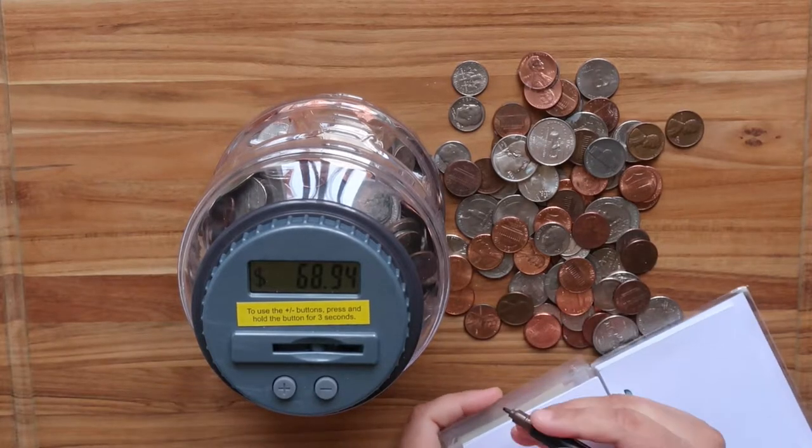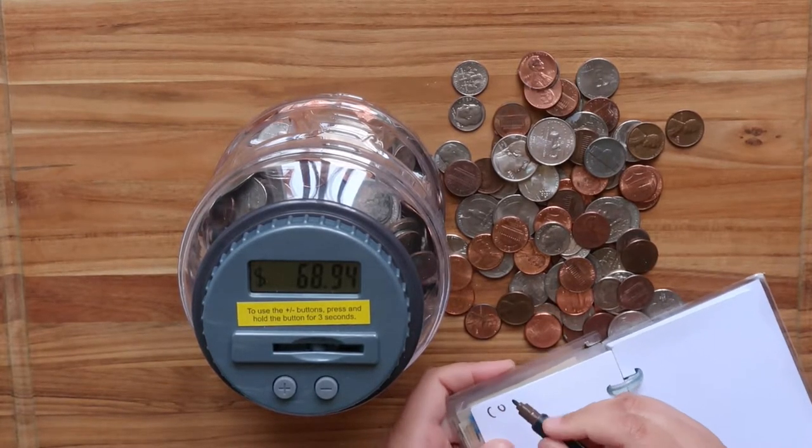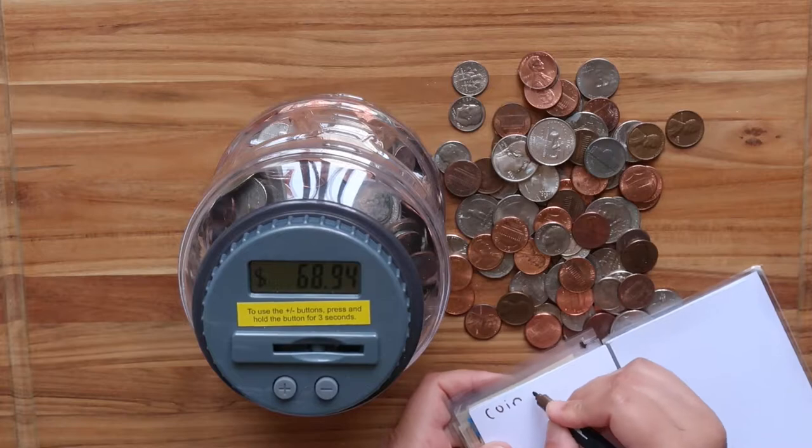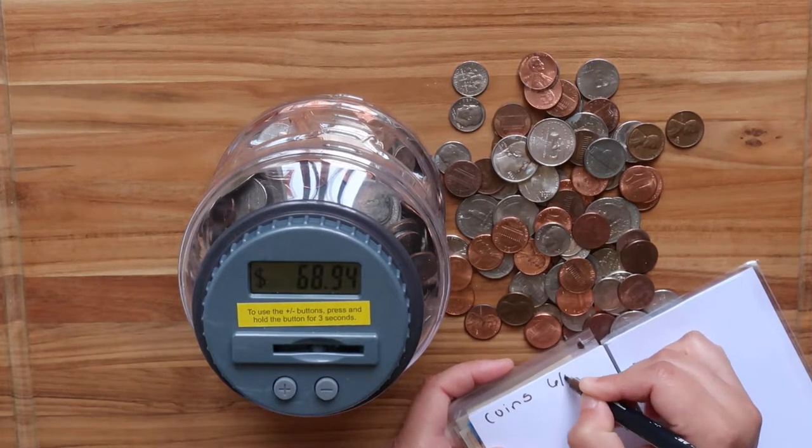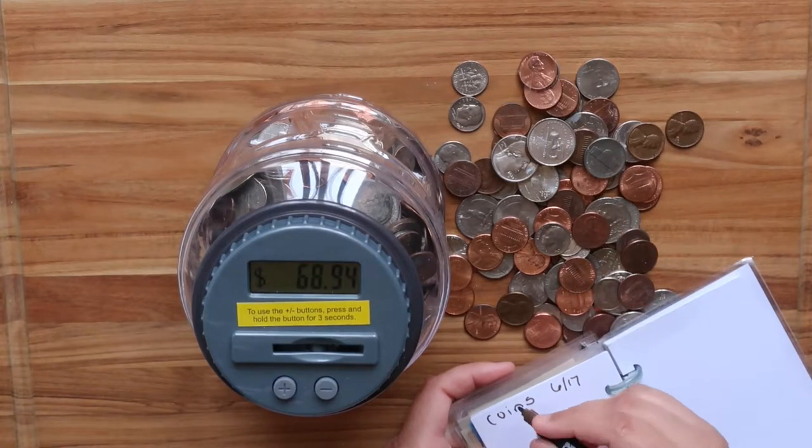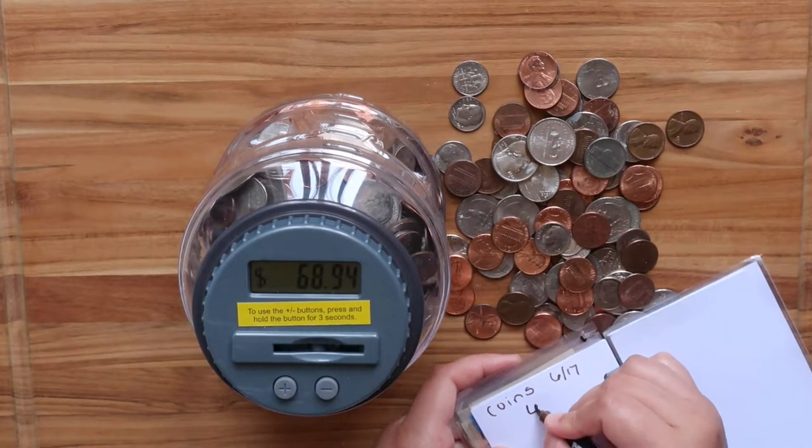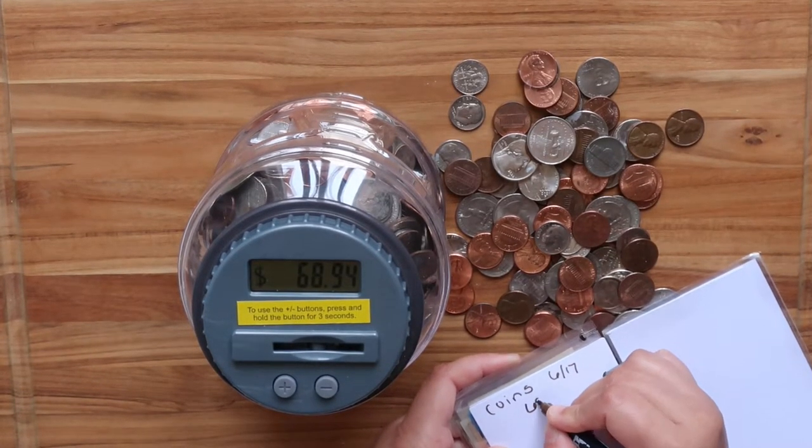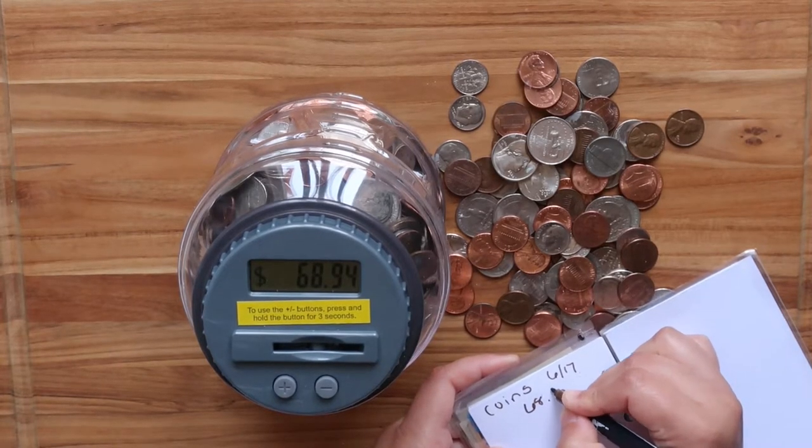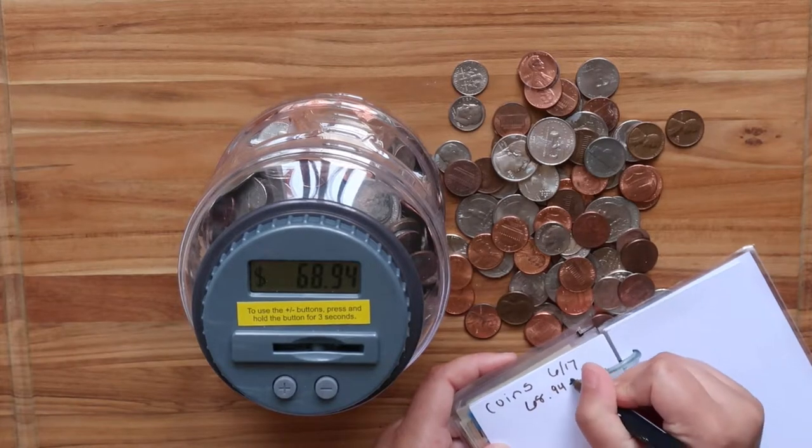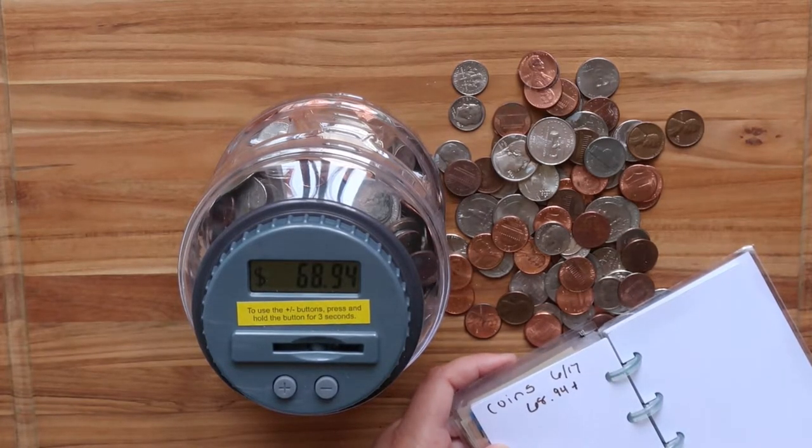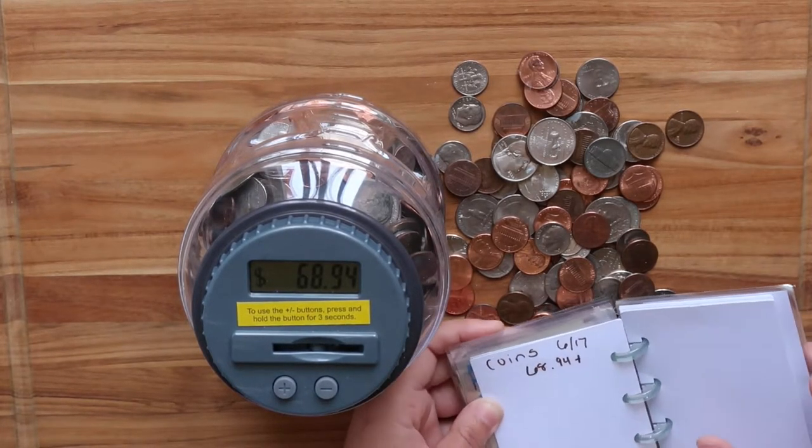Right now my coins for June total $6.17. So I'm putting my starting total at $68.94, and let's see what we end up with next. As of now it's $68.94.